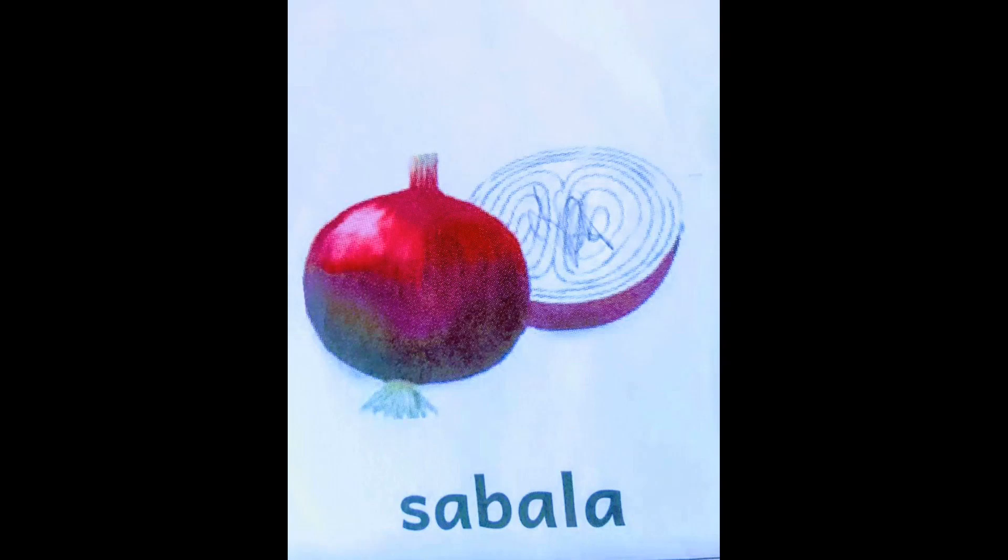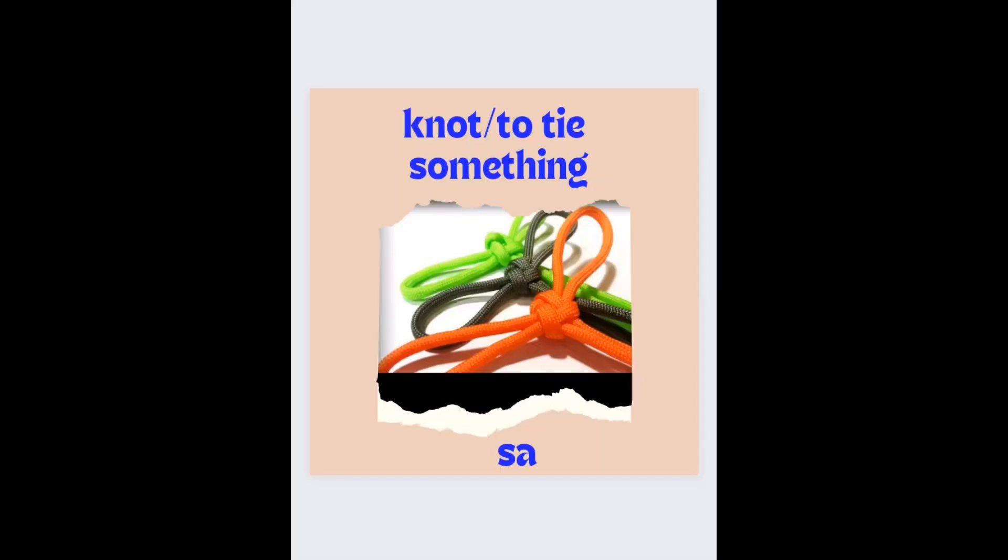The letter sound is S. This is a picture of Sabala — Sabala — this will help us not to forget our letter sound. Now let's look at some words. If you say 'se' it means to make a knot or to tie.